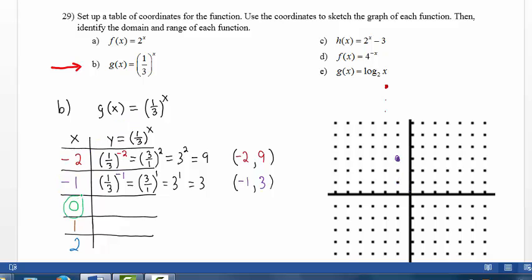When x is 0, we replace the variable x with the value 0. We have 1 third to the 0 power. And any number to the 0 power, except for 0 raised to the 0, but any other number to the 0 power is 1.